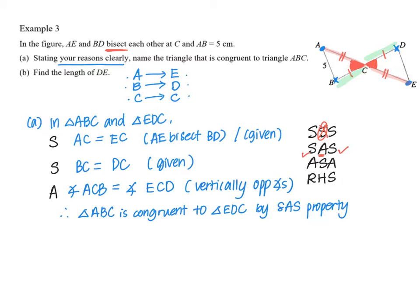Now part B, since I know that they are congruent, so if I want to find DE, DE actually matches with BA, which is actually 5 cm.